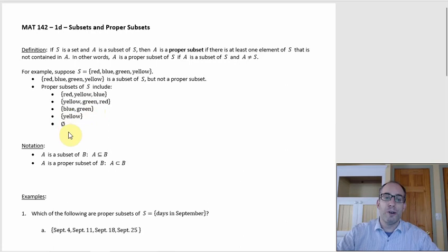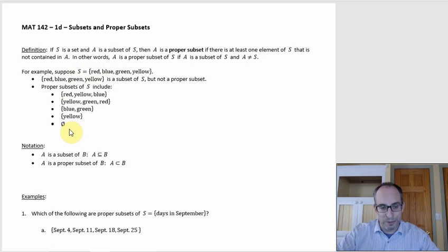And the empty set also works, because the empty set has to be a subset of every set. So it is a subset of S and there are elements of S that aren't in the empty set — more specifically all of them, since the empty set doesn't have anything in it.